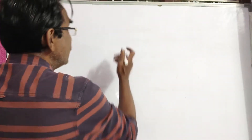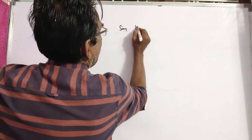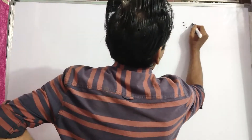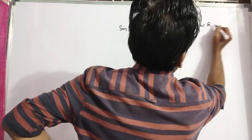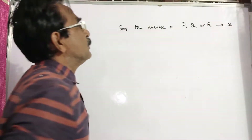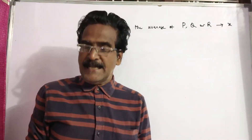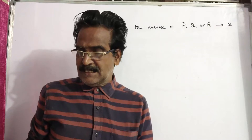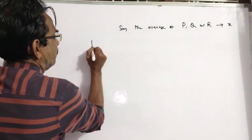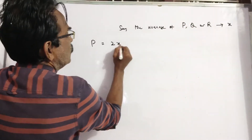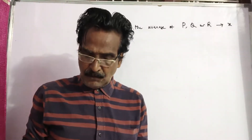P's age is twice the average age of P, Q and R. Say the average age of P, Q and R is X. So P is equal to 2X.